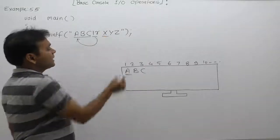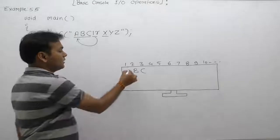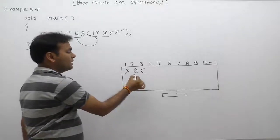After slash R, next character is X. Now A is replaced by X, then cursor will be available inside B.